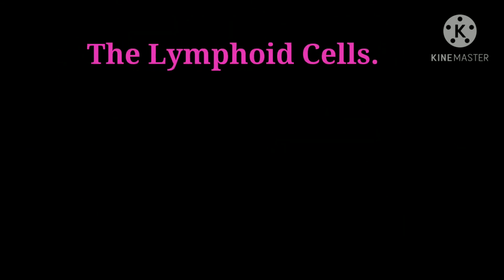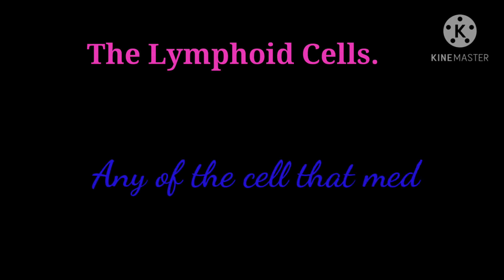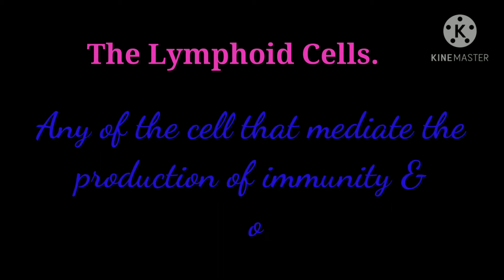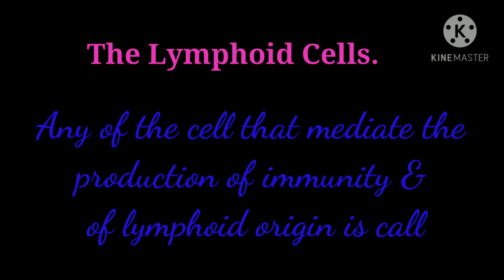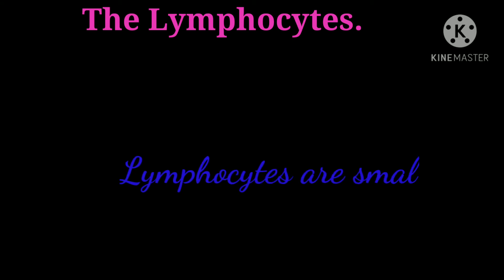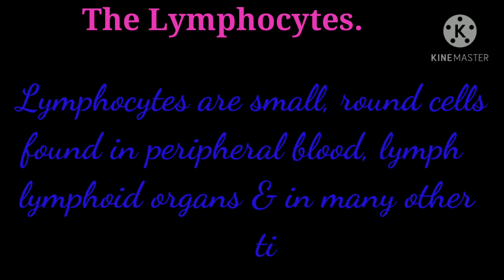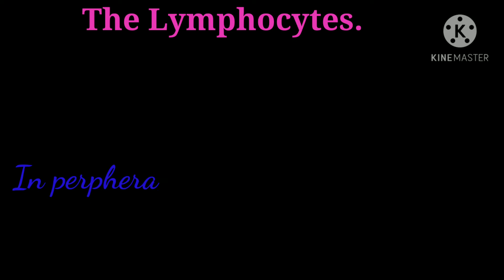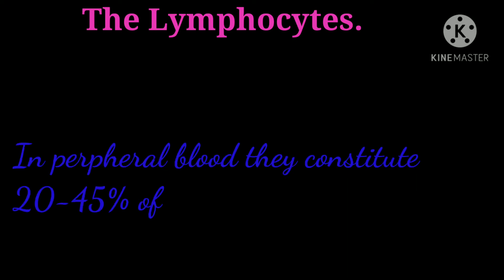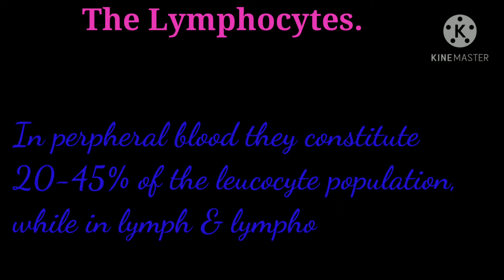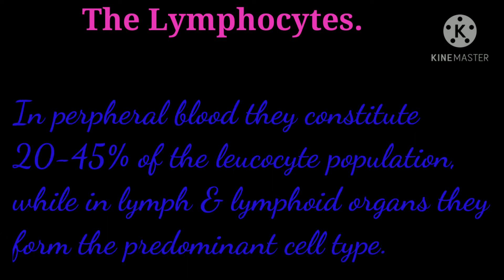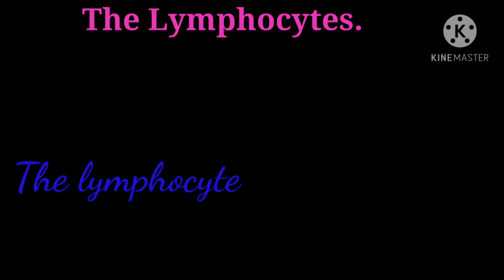Lymphoid cells. Any of the cells that mediate the production of immunity and are of lymphoid origin are called lymphoid cells. Lymphocytes are small round cells found in peripheral blood, lymph, lymphoid organs and in many other tissues. In peripheral blood, they constitute 20 to 45% of the leukocyte population, while in lymph and lymphoid organs, they form the predominant cell type.